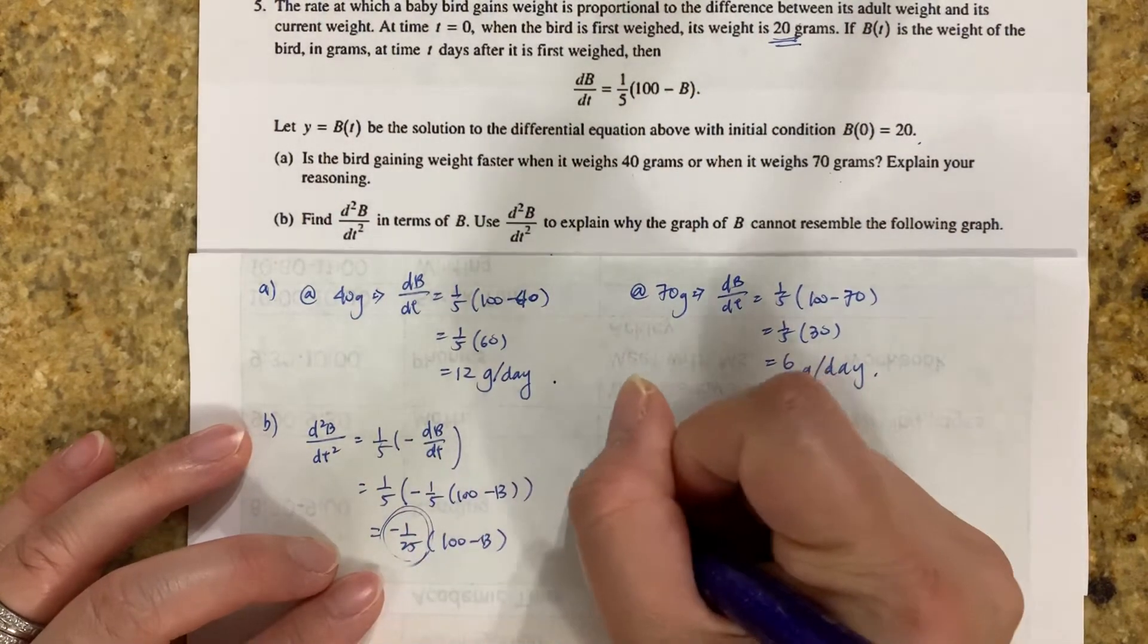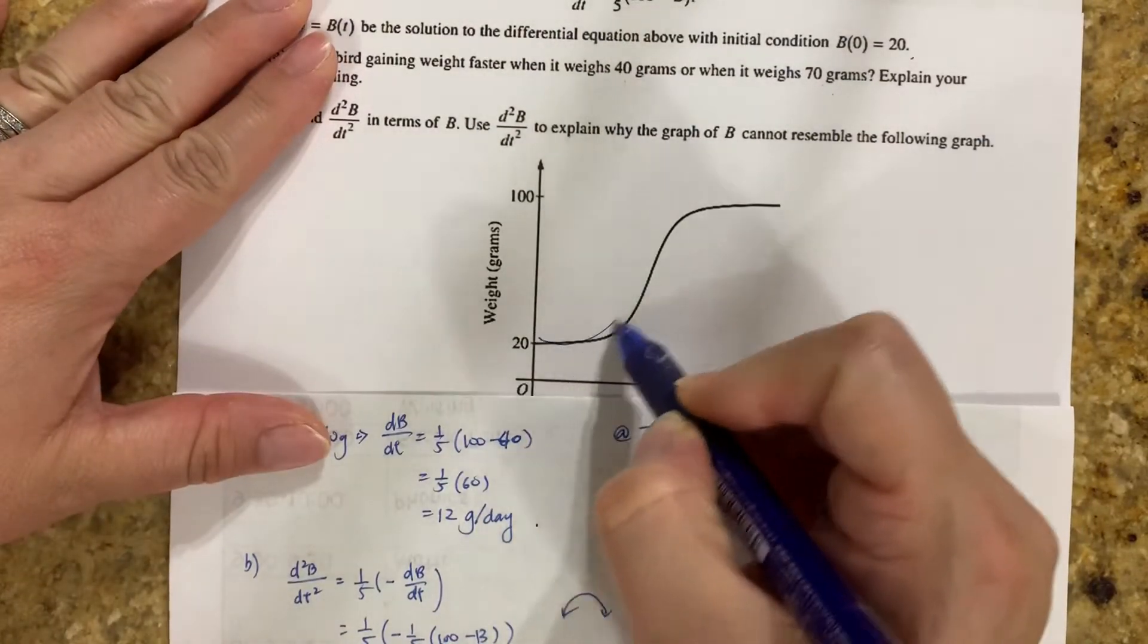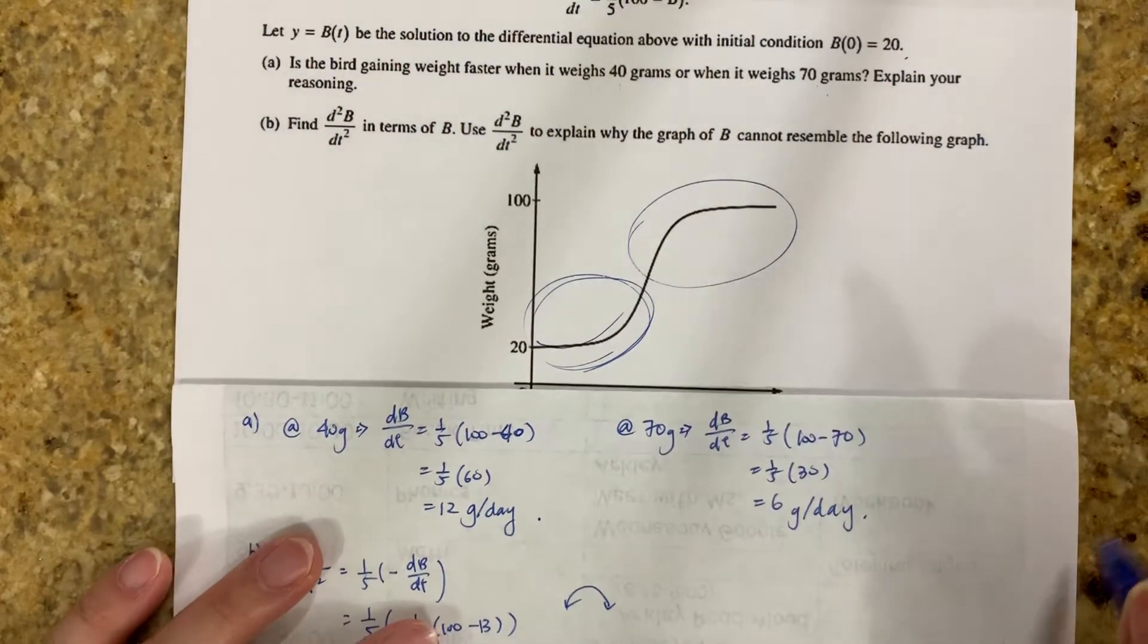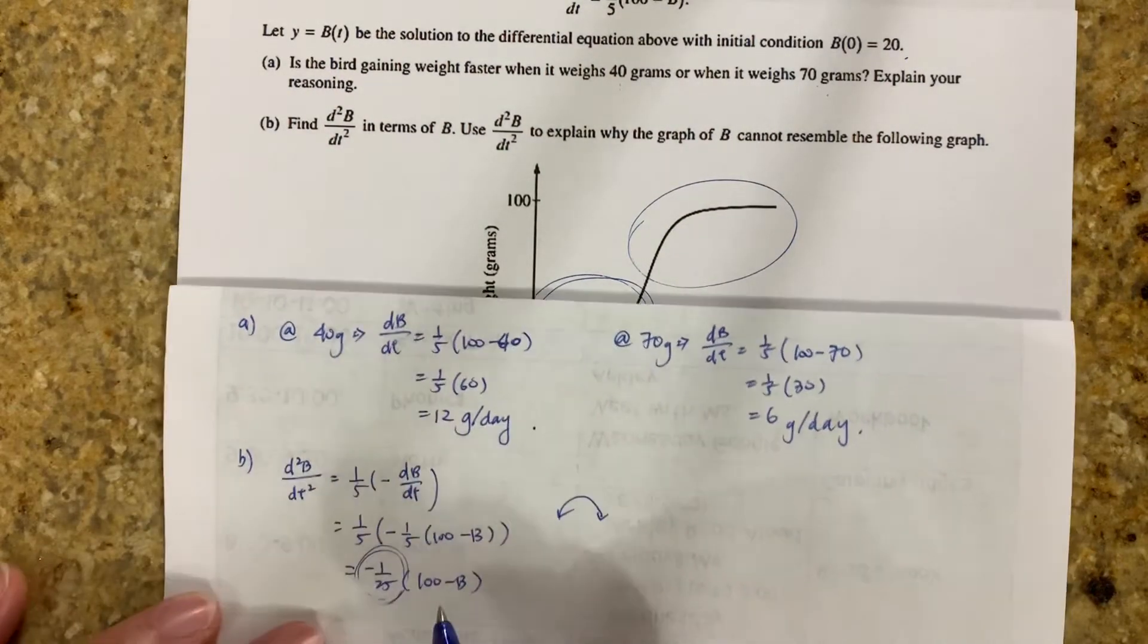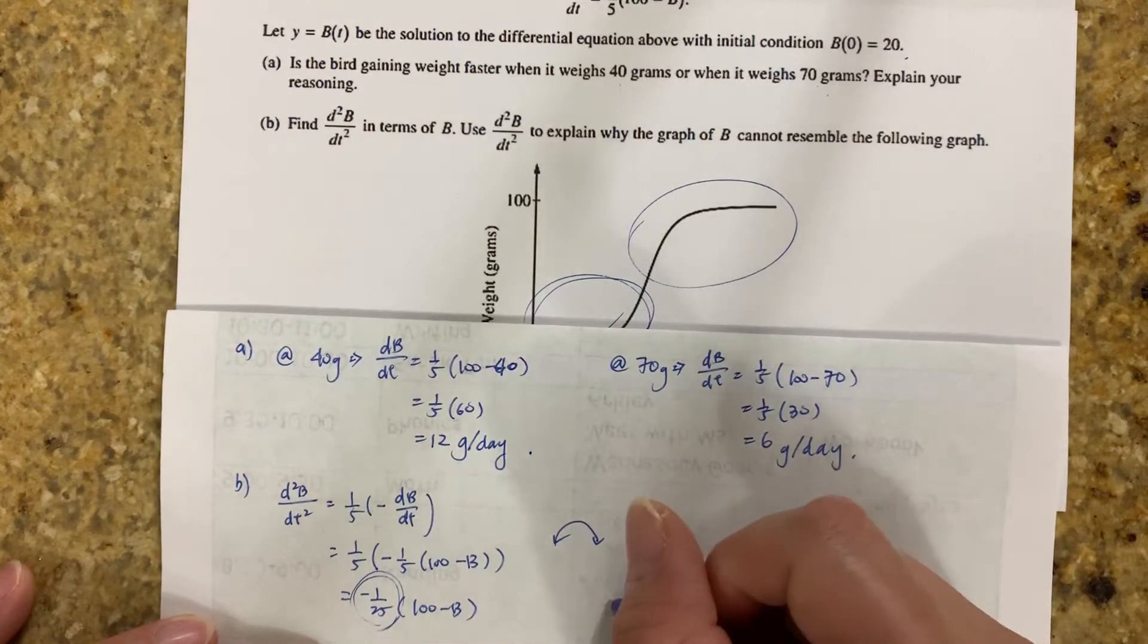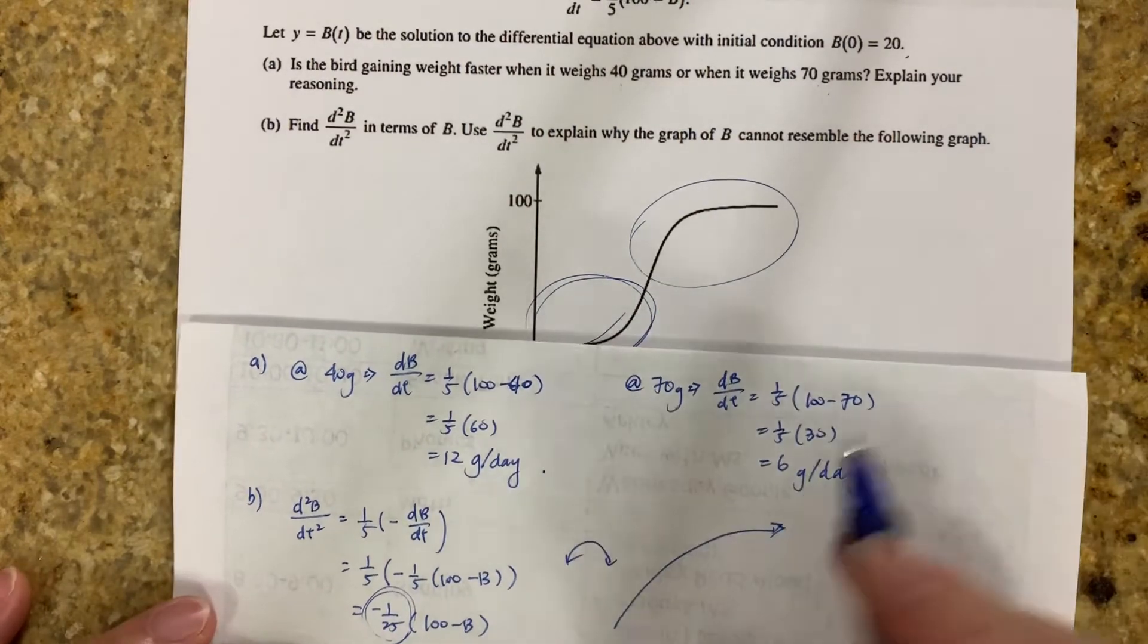If it's always negative, it needs to constantly concave down. But in this picture, this piece right here is concaving up. This is concaving down. So that's why this cannot be the graph because in order for it to be the graph, it has to be concaving down the entire way. So even if it's going this way, it's concaving down. So that's why it cannot be the graph.